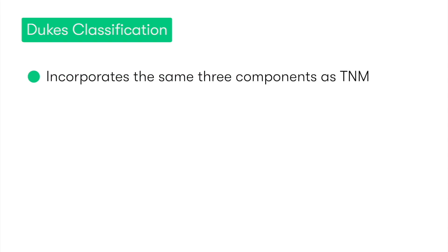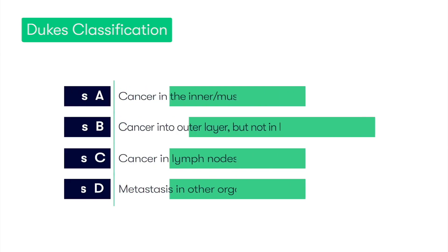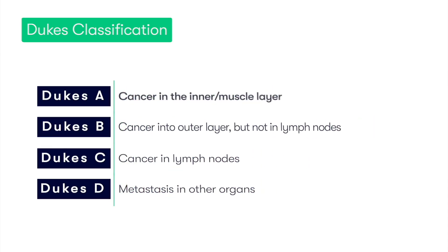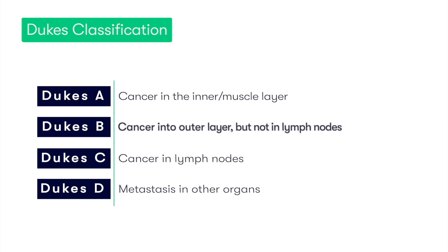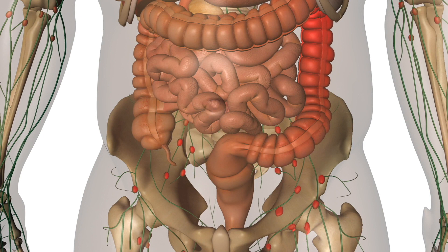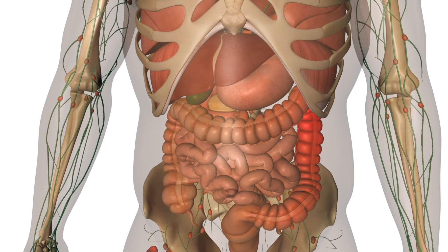The Dukes classification incorporates the same three components as the TNM, and therefore we can demonstrate direct equivalences between the Dukes staging of A to D and the TNM staging of 1 to 4. In Dukes A, the earlier stage, the cancer has grown into the inner layer or the muscle layer of the bowel wall. In Dukes B, the cancer has grown through the outer layer of the bowel wall but hasn't spread to any lymph nodes or other organs. In Dukes C, the cancer has spread to lymph nodes. And in Dukes D, there has been metastasis of the cancer to other parts of the body.